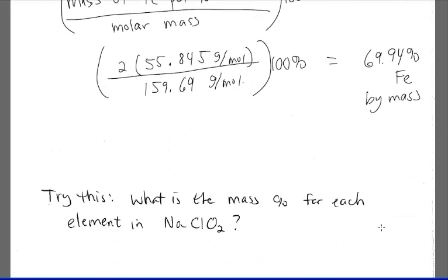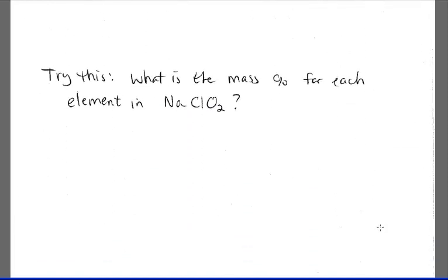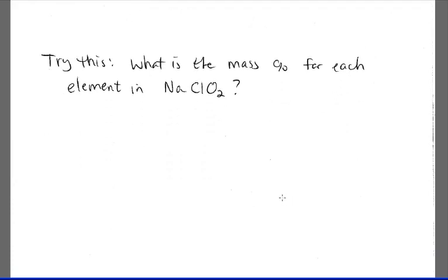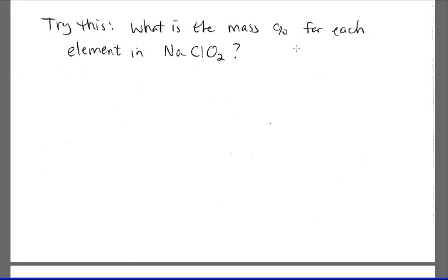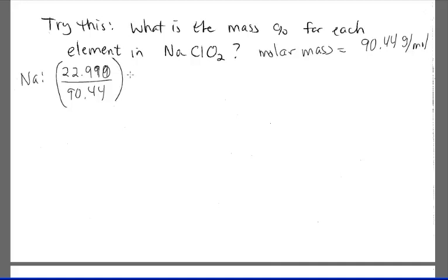Time for you to try one. What's the mass percent for each element in NaClO2? Give it a try and then start the video again. So we can calculate the entire molar mass of this substance by adding everything up, and we get 90.44 grams per mole. So let's do each element at a time. Sodium. We have the mass, we only have one sodium in here, so the molar mass of sodium is 22.9990. Divide that by the entire mass, and they're both grams per mole. Multiply by 100%, and you'll get 25.42% sodium in that compound.